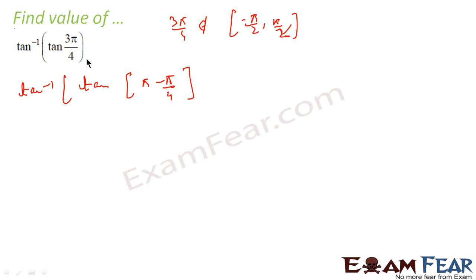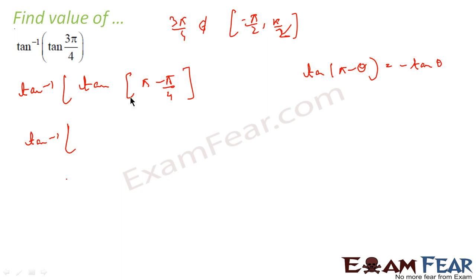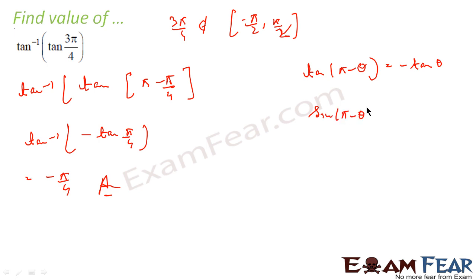I have just written 3π/4 as π - π/4. Now we can use the formula: tan(π - θ) is nothing but -tan θ. For sin, sin(π - θ) is sin θ, but for tan, tan(π - θ) is -tan θ. So tan inverse of tan(π - π/4) becomes tan inverse of -tan(π/4), which is -π/4.